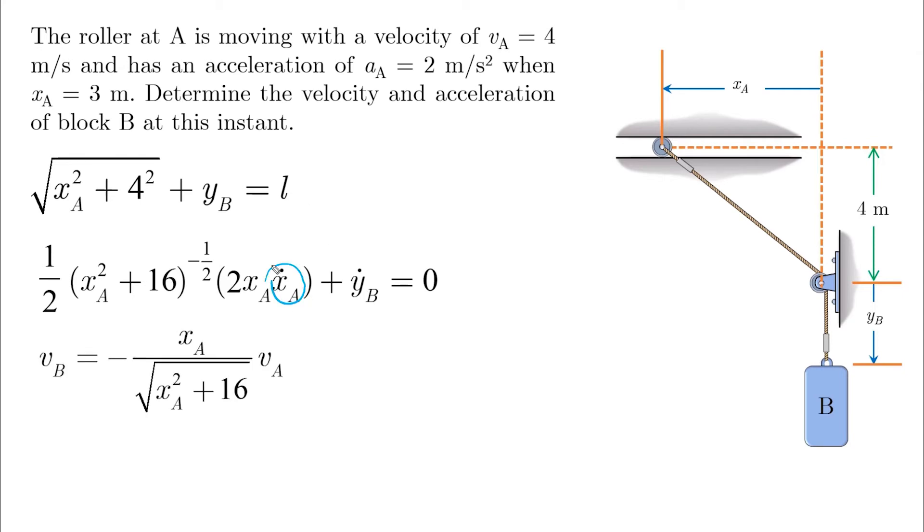Knowing that x dot A is vA and y dot B is vB, we rearrange to get the velocity equation. By direct substitution of xA which is 3, and vA which is 4 meters per second, we get the velocity of B which is minus 2.4 meters per second, or 2.4 meters per second directed up because positive is pointing down.